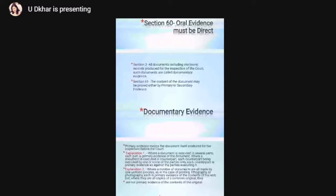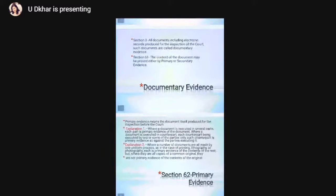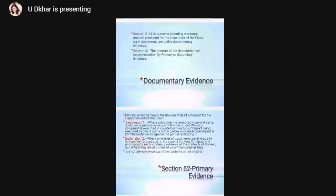Now, what is primary evidence? Primary evidence means the document itself produced for inspection before the court. In this section, there are two explanations. First, where a document is executed in several parts, each part is primary evidence of the document. Second, where a document is executed in counterpart, each counterpart executed by one or some of the parties only — such counterpart is primary evidence against the party who executed it.